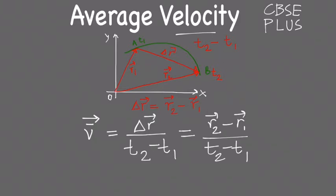Now whenever you are given a problem where you have to find the average velocity, just keep in mind you have to find out first the displacement, and then you have to find the time. Put these things in the formula and you will get average velocity.